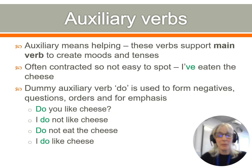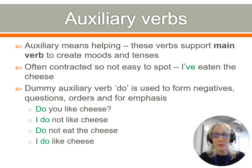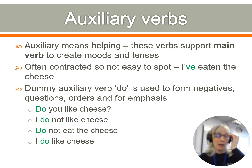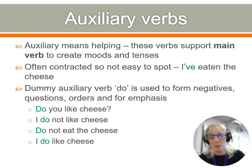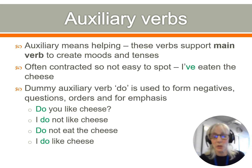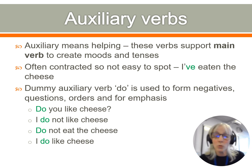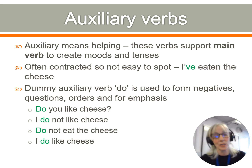An auxiliary verb — 'auxiliary' means to help. These verbs support the main verb to create moods and tenses, and they're often contracted so they're not easy to spot. For example, in 'I've eaten the cheese,' the auxiliary verb 'have' is supporting 'eaten' to help make the tense. The dummy auxiliary verb 'do' is used to form negatives, questions, orders, and for emphasis. This is really helpful for child language development because forming negatives and questions with 'do' is one of the latest grammatical forms children develop — it's quite complex. It's also worth noting that in older texts, negatives and questions may be formed without the dummy auxiliary 'do,' as it's a relatively recent development in the history of English.